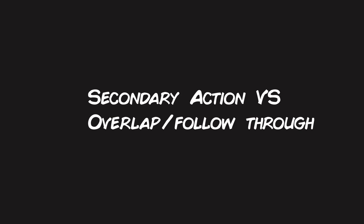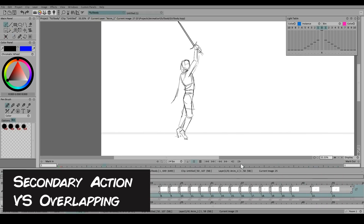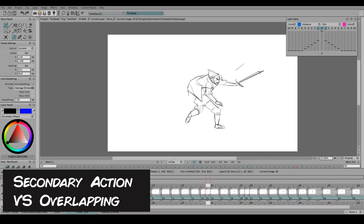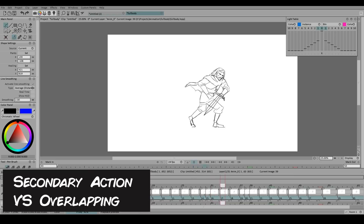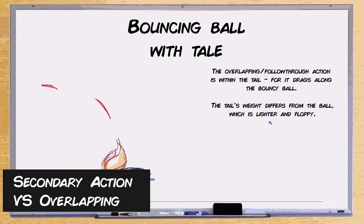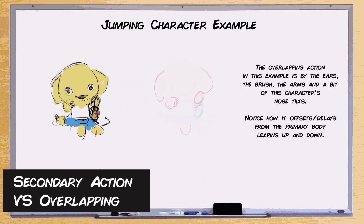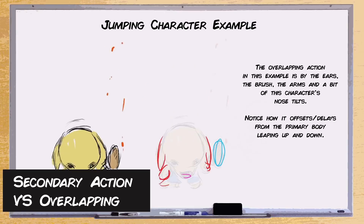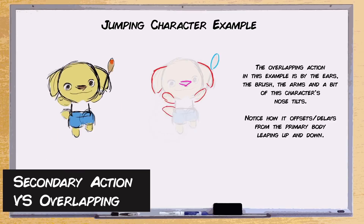Secondary action versus overlapping and follow-through action — this is the most mixed-up pair in animation, and even professional animators get it wrong. If I asked which one resembles the flowing action of hair, cloth, or a tail on a character, many would say secondary action, but that's wrong. This is actually overlapping and follow-through action. Overlapping action is that follow-through of things like hair and cloth — when something moves, another part continues and completes that movement before following the thing it's attached to. This also applies to body parts like arms dragging during movement, giving you organic animation.